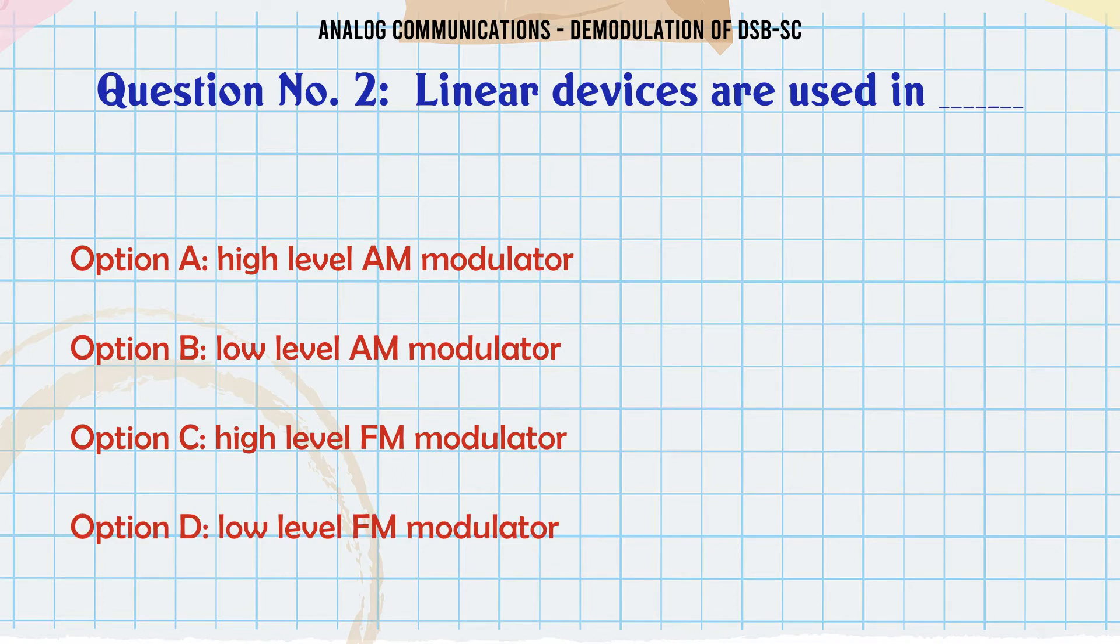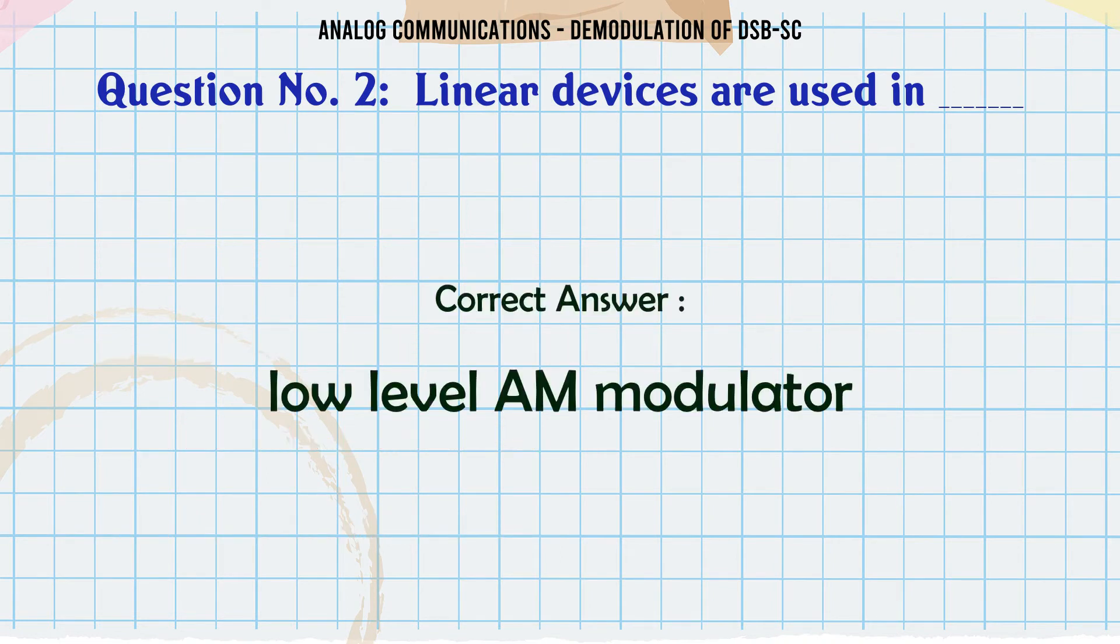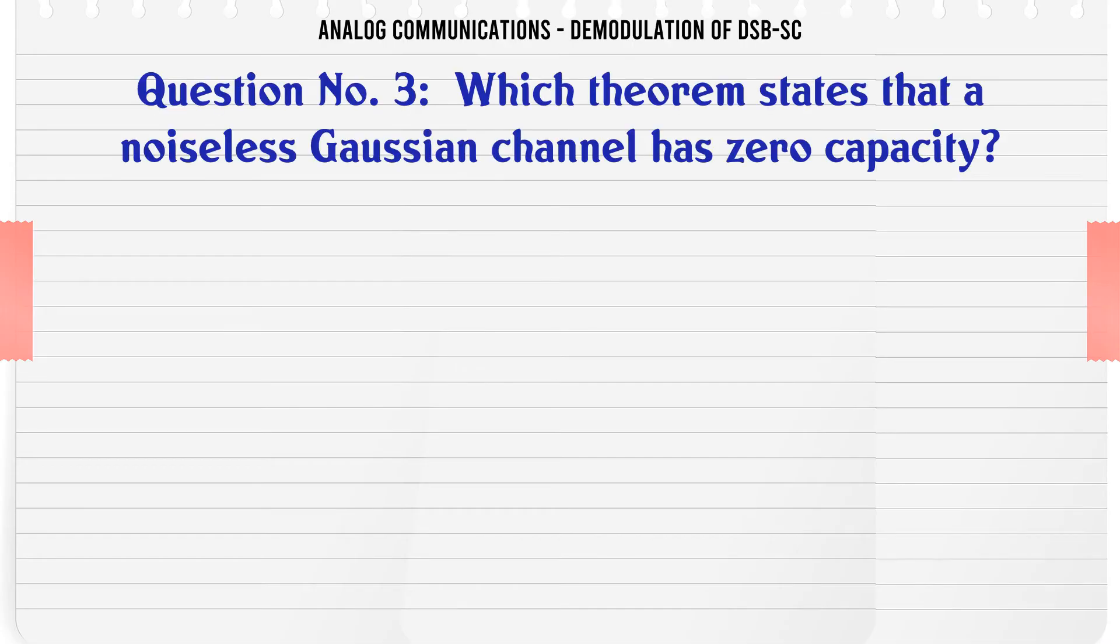D, low level FM modulator. The correct answer is low level AM modulator. Which theorem states that a noiseless Gaussian channel has zero capacity?